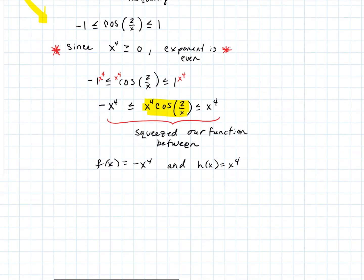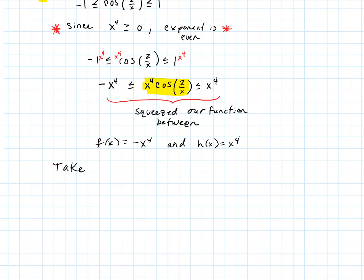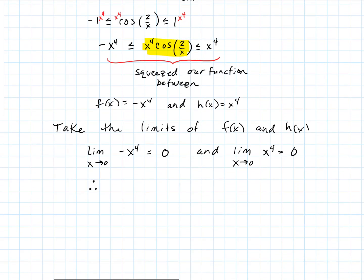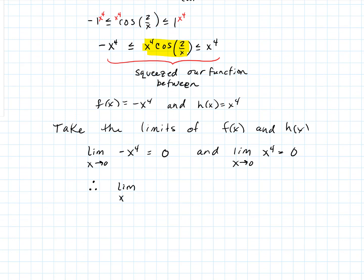Now that we've bounded our function, we can take the limits of f(x) and h(x). The limit as x approaches 0 of −x⁴: by direct substitution, this is a polynomial, so we plug in 0 and get 0. Similarly, the limit of x⁴ as x approaches 0 also equals 0. Therefore, since x⁴ · cos(2/x) is bounded between those two functions, which both have limit 0, the limit of x⁴ · cos(2/x) as x approaches 0 must also equal 0, by the squeeze theorem.